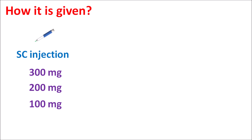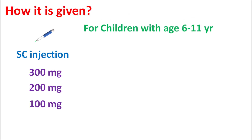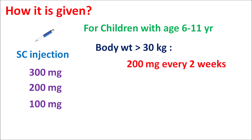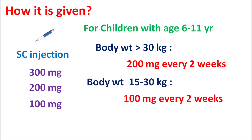In children, the dose is somewhat less and is based on body weight. For children aged 6 to 11 years with body weight greater than 30 kg, the dose is 200 mg every two weeks. For children with body weight 15 to 30 kg, it can be given as 100 mg every two weeks or 300 mg every four weeks. In this way, dupilumab can be given to both children aged 6 years and older, and adults.